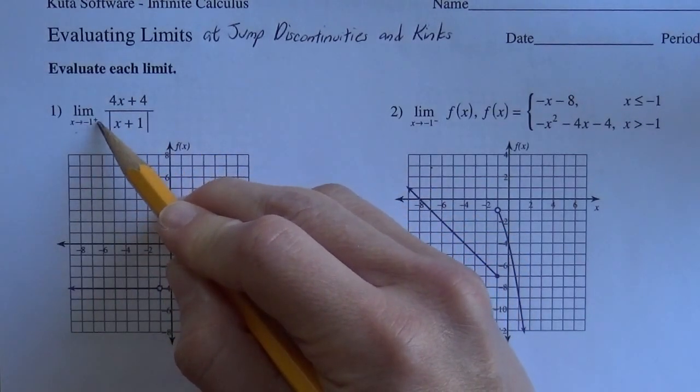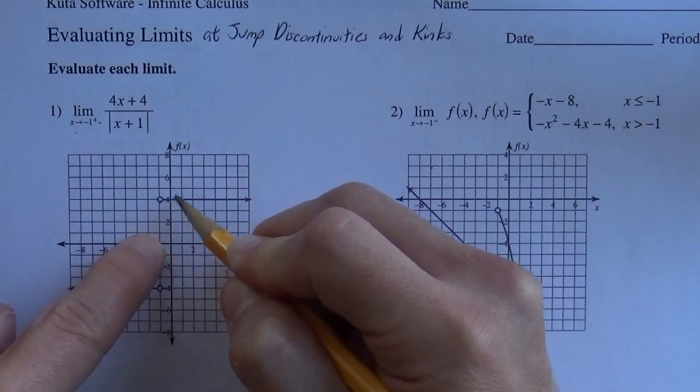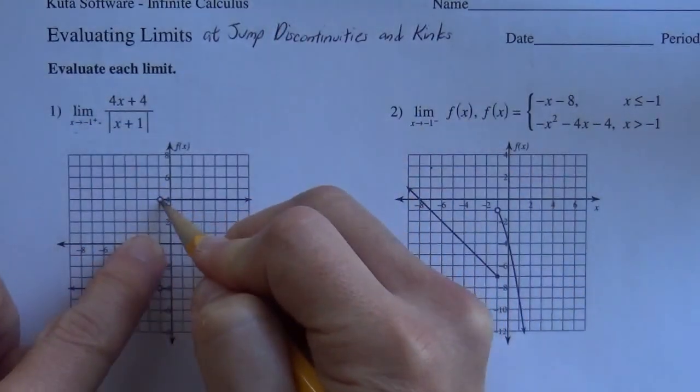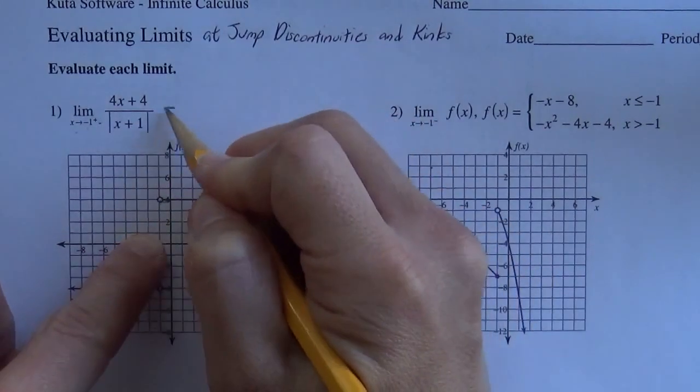But this little plus here means negative 1 coming from the right. So I go to negative 1 and on the right side, it's this one. So coming from the right, the y value is going to be 4.